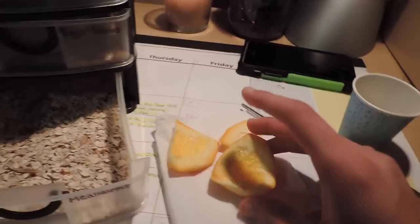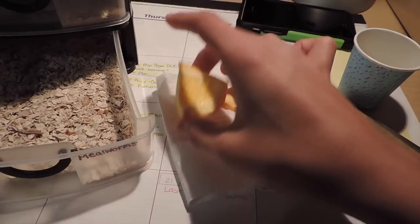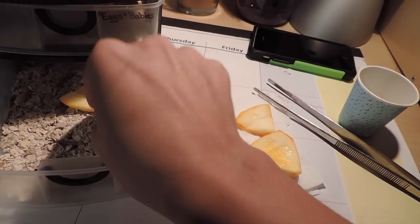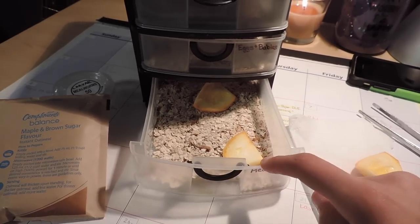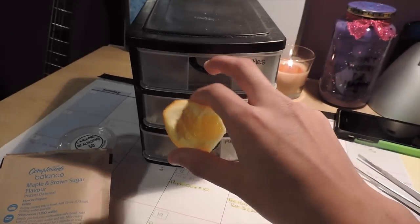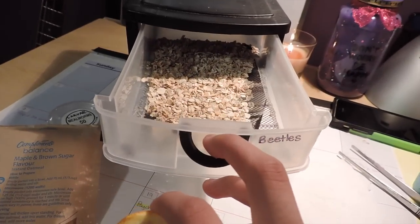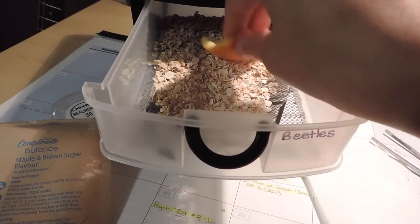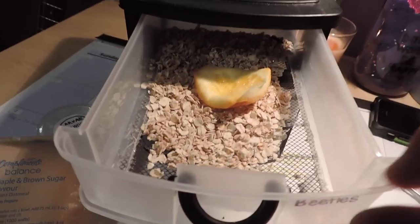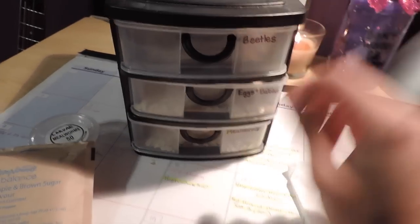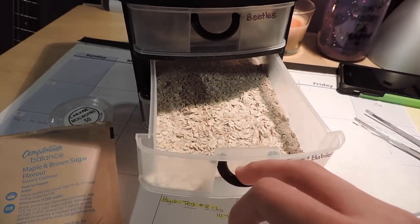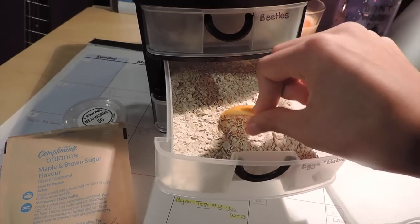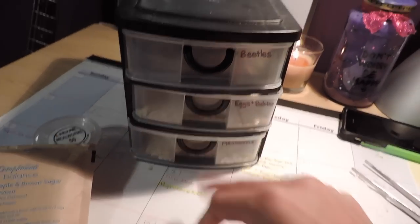What I'm going to do is take two of these. I tend to put more in this drawer because I feel like they use it more. Take one of them, put it up in the beetles. Do that. Actually, wait, no. Take one of these out, put it in the eggs and babies. They need food too. There you go.